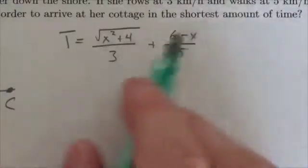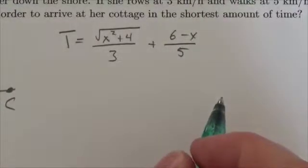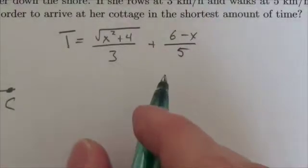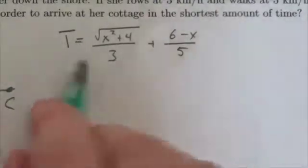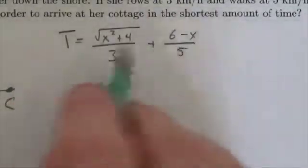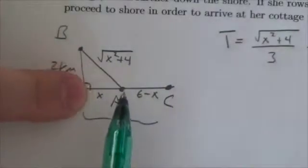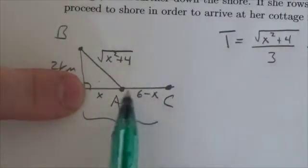And so now what we want to do is, because we're looking to minimize the amount of time that she spends going to her cottage, we're going to take the derivative with respect to X because that's the variable here. So basically as we adjust X, maybe make that distance larger or make the distance smaller, we're going to see how it affects her time.